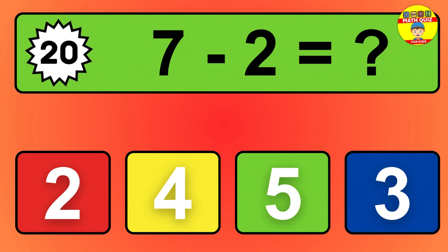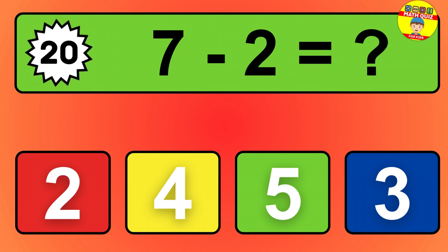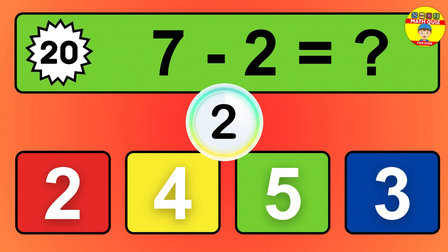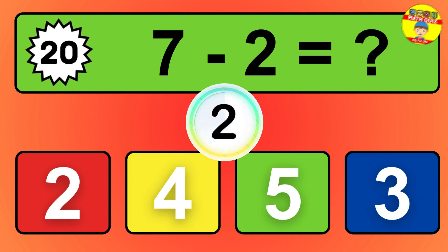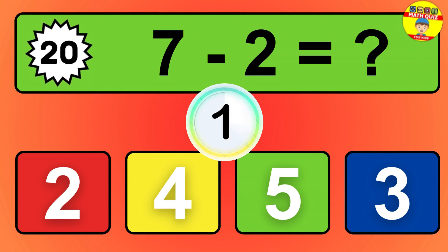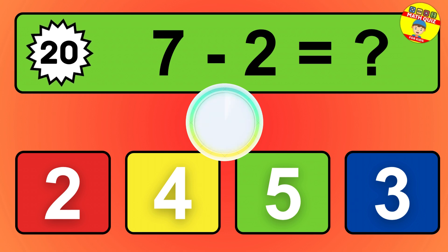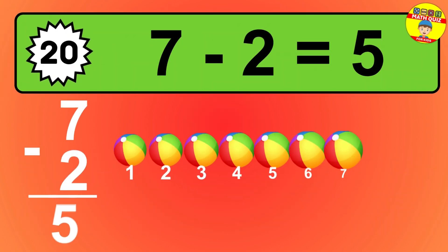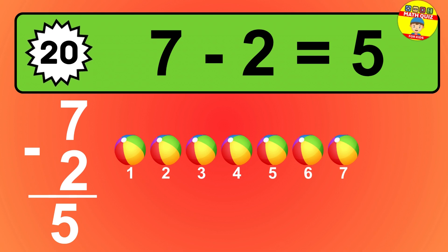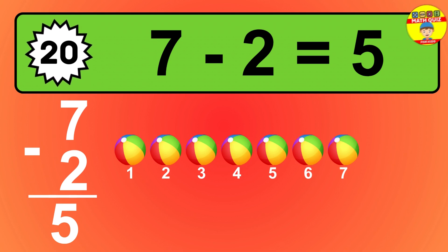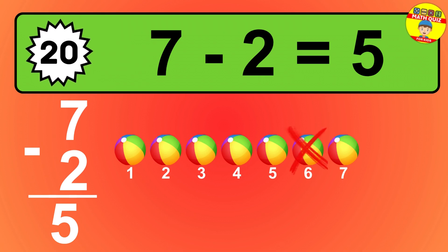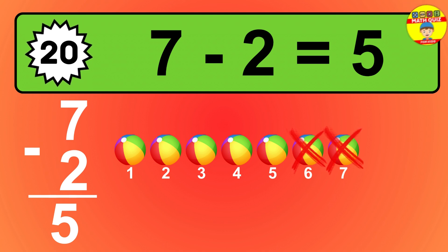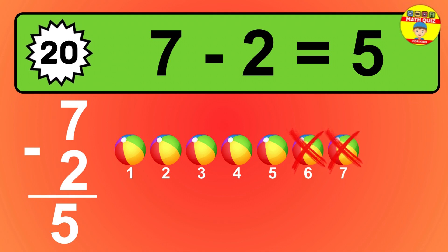Question 20. 7 minus 2 equals what? So the answer is 7 minus 2 is 5. Let's count it. 1, 2, 3, 4, 5.